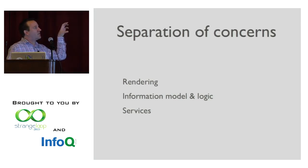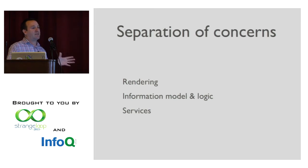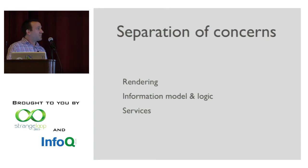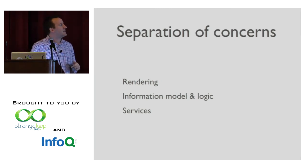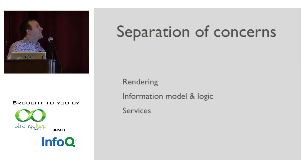In our information model and logic, that is where all the application logic lives, all the state lives. That's really very simple — it's data and data transformation. This is the kind of thing that Clojure is really good at. We can run this code in the browser, or run it in Clojure to test it, which makes testing very easy. So how do we separate these things?